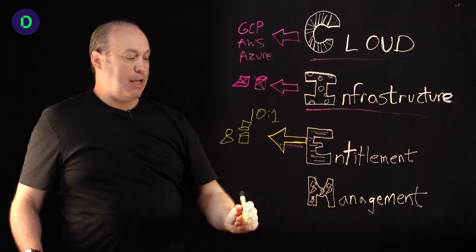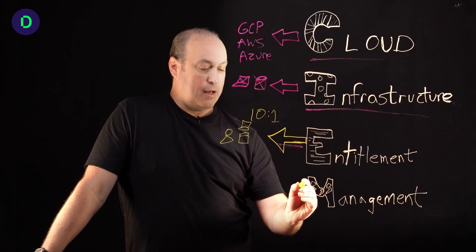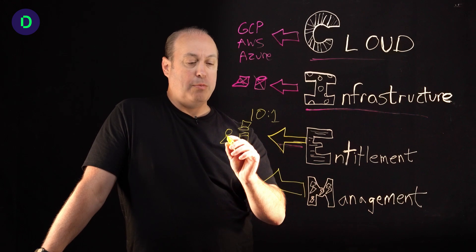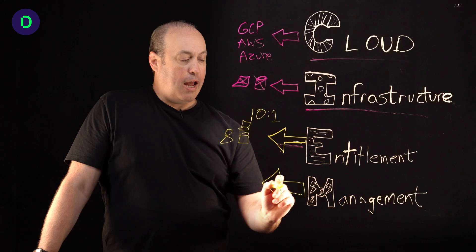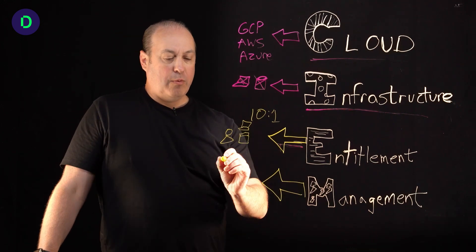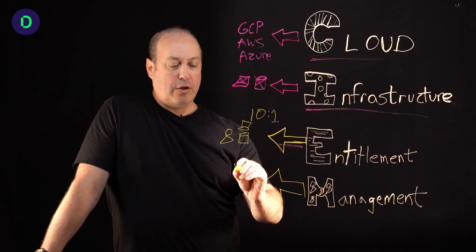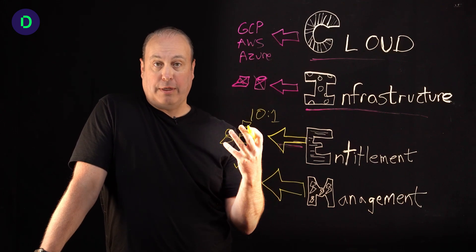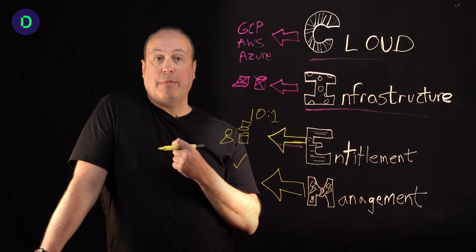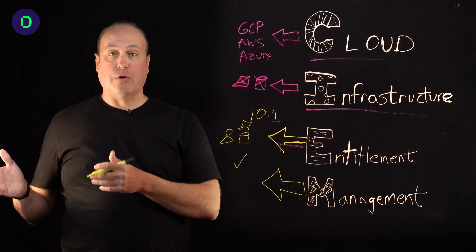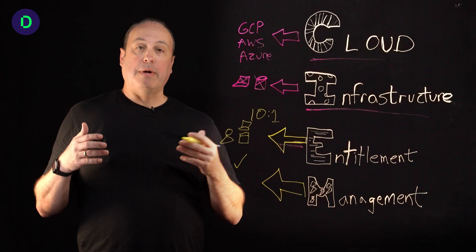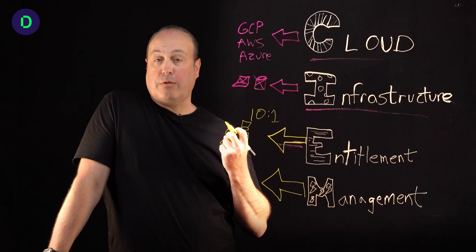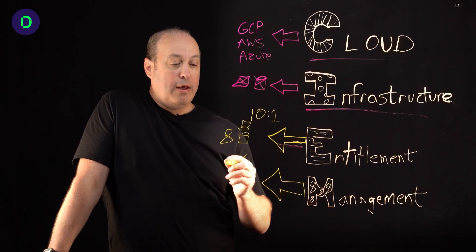And finally, the M stands for management. Following on with entitlement is finding those users, discovering them, human and non-human, and then managing them. What do we mean by management? First of all, that you're able to find these users and make sure that they have the right amount of entitlement. So in other words, maybe somebody needed access to a virtual server farm six months ago, but now they no longer need it. You find that administrator and you're able to take those rights away because they no longer need them.